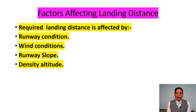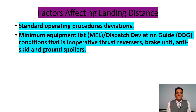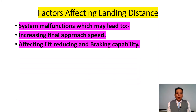The required landing distance is affected by: runway condition, wind conditions, runway slope, density altitude, type of braking, anti-skid system, final approach speed, landing technique, weight of the aircraft, standard operating procedure deviations, minimum equipment list, and dispatch deviation guide conditions such as inoperative thrust reversers, brake units, anti-skid, and ground spoilers. System malfunctions may also increase final approach speed, affecting lift reduction and braking ability.